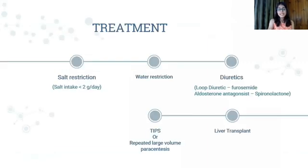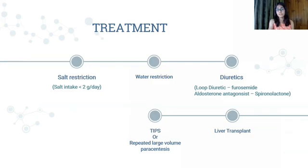Moving on to treatment. In mild cases, you begin by advising the patient to restrict salt intake to less than 2 grams per day. If that doesn't work, you move on to restricting water consumption. In more severe cases, diuretics are given — loop diuretics like furosemide and aldosterone antagonists like spironolactone, starting at a lower dose and increasing as required. However, if the highest possible safe dose shows no improvement, the patient is said to have refractory ascites. In this case, liver transplant is the only definitive treatment. In the waiting period for a donor, possible treatments include TIPS — transjugular intrahepatic portosystemic shunt — or repeated large-volume paracentesis.